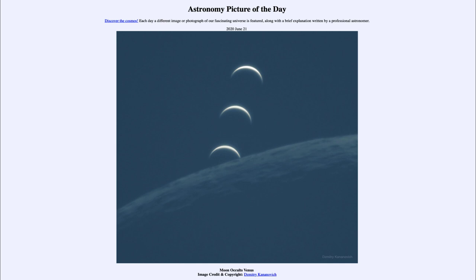Today's picture for June the 21st of 2020 is titled Moon Occults Venus. It looks like something rising over the limb of something else, and those two things are actually two of the nearest objects to the Earth in the solar system. The large object is our Moon, the closest astronomical object to us, and the one rising above it is the planet Venus, the next closest astronomical object to us here on Earth.